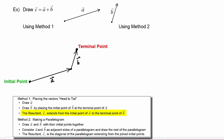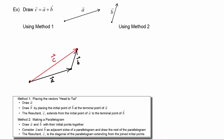Now the last step says that the resultant vector C extends from the initial point of vector A to the terminal point of vector B. So vector C starts from the initial point of vector A and goes directly to the terminal point of vector B. This vector C represents the sum of vector A plus vector B — it's like taking a shortcut, walking directly along vector C instead of along A then B.